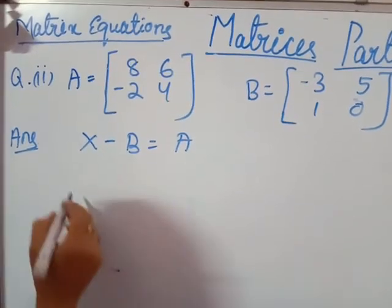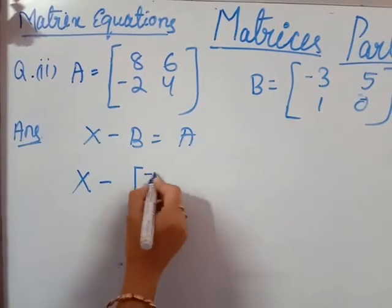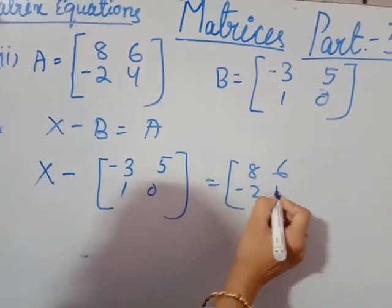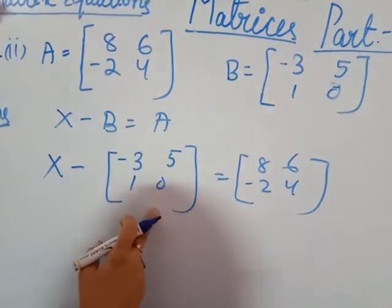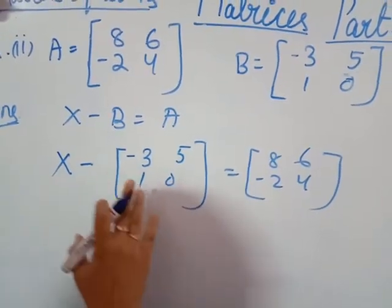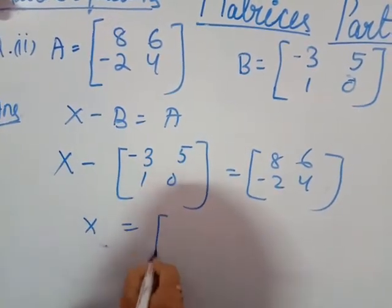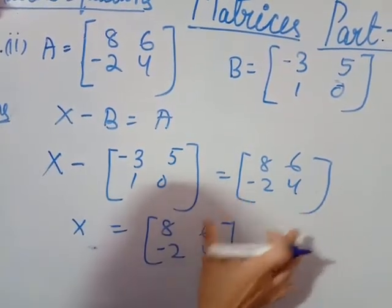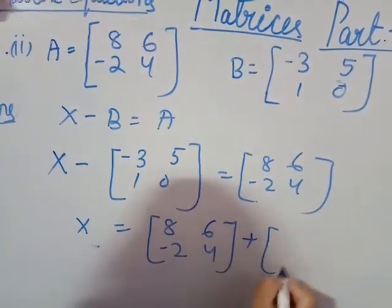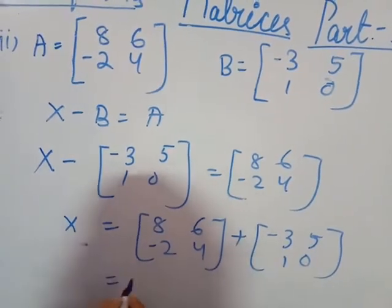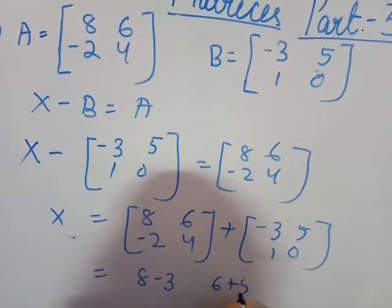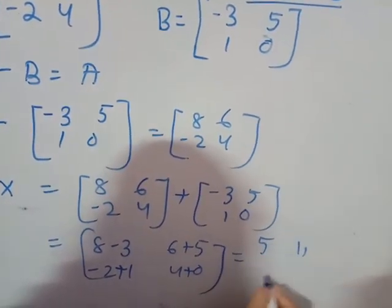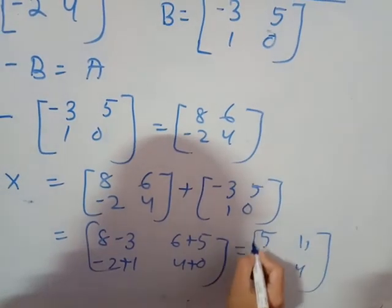Now go to the second example: X minus B equals A. X is the unknown matrix. B is minus 3, 5, 1, 0 and A is 8, 6, minus 2, 4. The sign of B is minus, so when it goes to the other side it becomes addition. So X equals A plus B: write 8, 6, minus 2, 4 plus minus 3, 5, 1, 0. Adding corresponding elements: 8 plus minus 3 = 5; 6 plus 5 = 11; minus 2 plus 1 = minus 1; 4 plus 0 = 4. So X equals 5, 11, minus 1, 4.